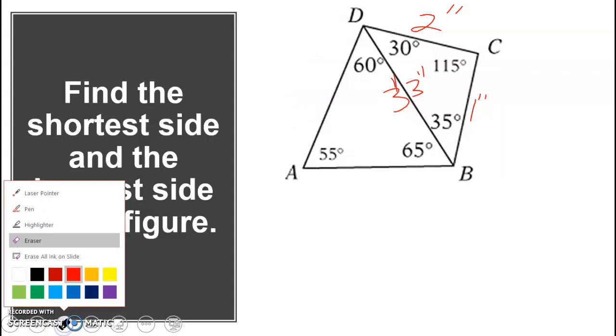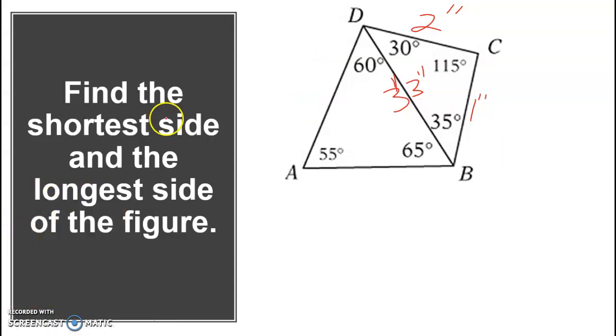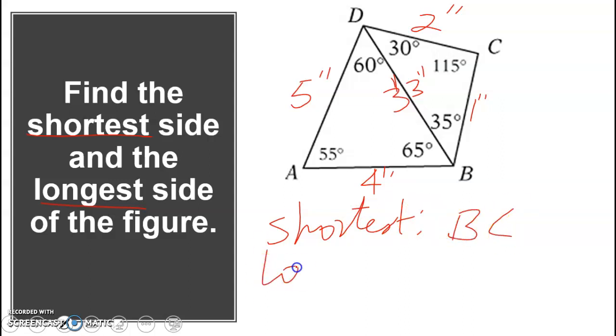It should be, you go from 55 to 60 actually. So 60, this should take four, and then 65 opposite AD should take five. And so the shortest, we are asking the shortest and the longest. So the shortest is BC and the longest is AD.